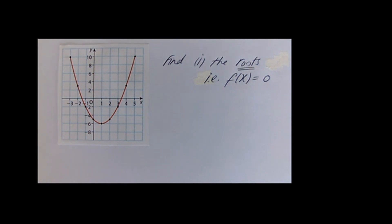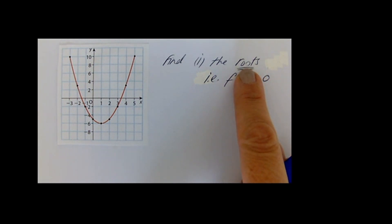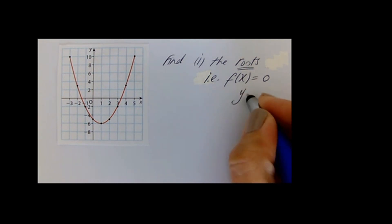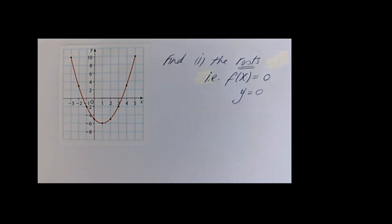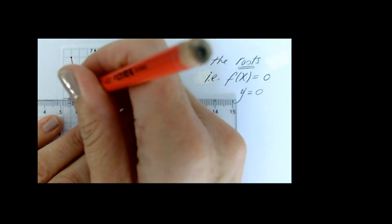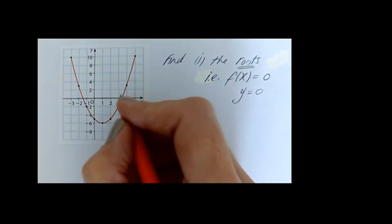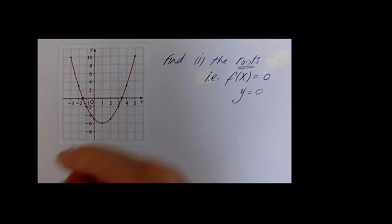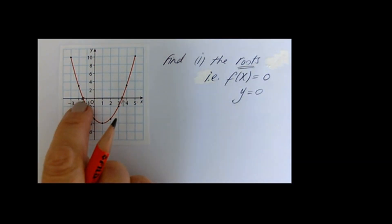This question asks you to find the roots of this function — in other words, where f of x is equal to 0. Watch out for that terminology: the roots means where f of x is equal to 0, which means where y is equal to 0. Y is 0 on the y axis, and when we go to the y we draw a horizontal line — which is actually the x axis. So the roots is asking you where that curve cuts the x axis.